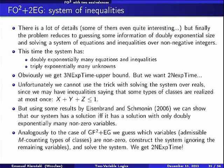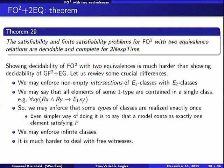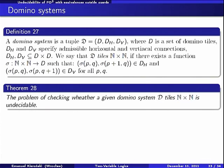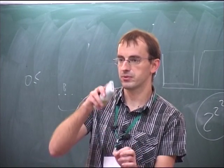I will go back to the undecidability theorem. I will try to explain why the two-variable guarded fragment becomes undecidable if we allow equivalence relations outside guards. I will use a reduction from domino systems. A domino system is a tuple consisting of a set of domino tiles and restrictions on horizontal and vertical connections. The problem is to tile an N-by-N grid preserving those constraints — specifying which pairs of domino types may be horizontal neighbors and which may be vertical neighbors.